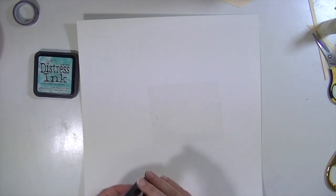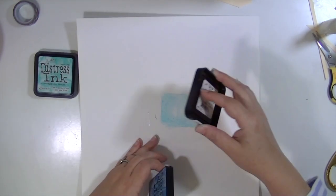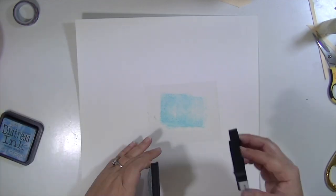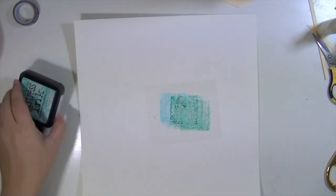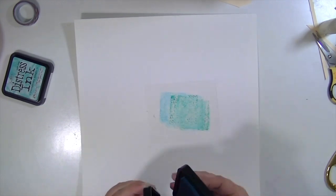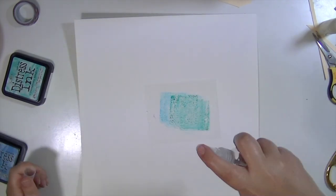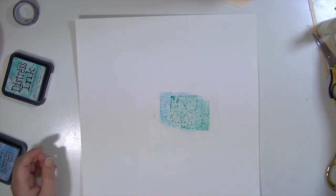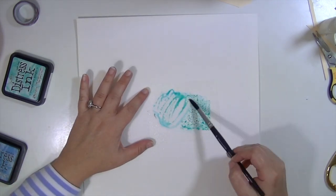Now I'm going to add some distress ink, using the same technique that I did last week except that I'm mixing my own color. I've taken tumbled glass and evergreen bough and I've smushed them onto my packaging, added some water.